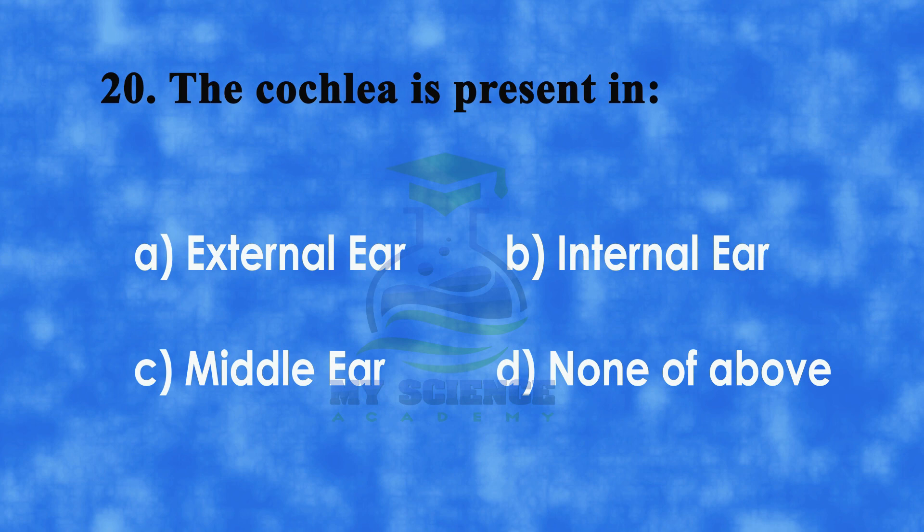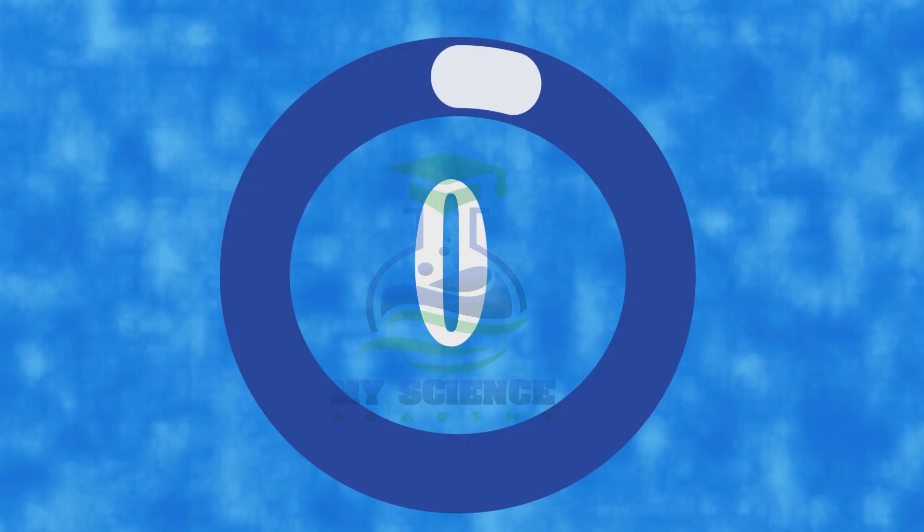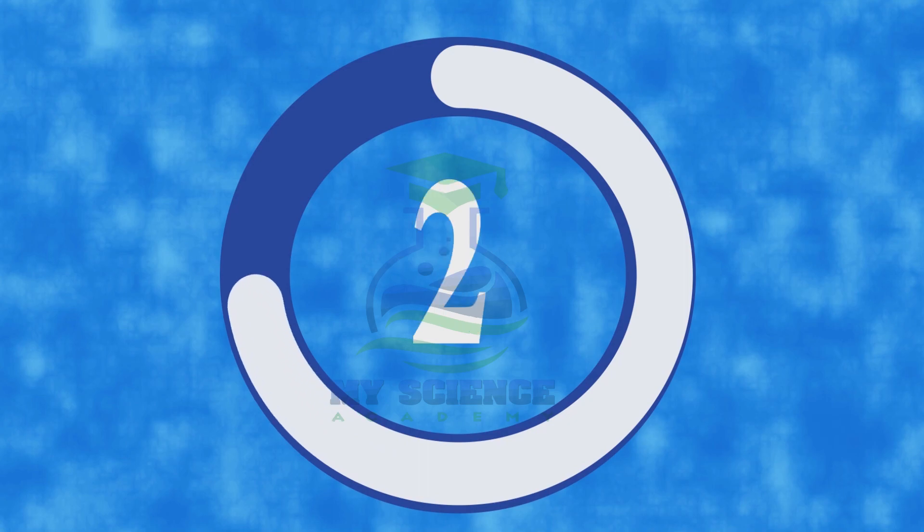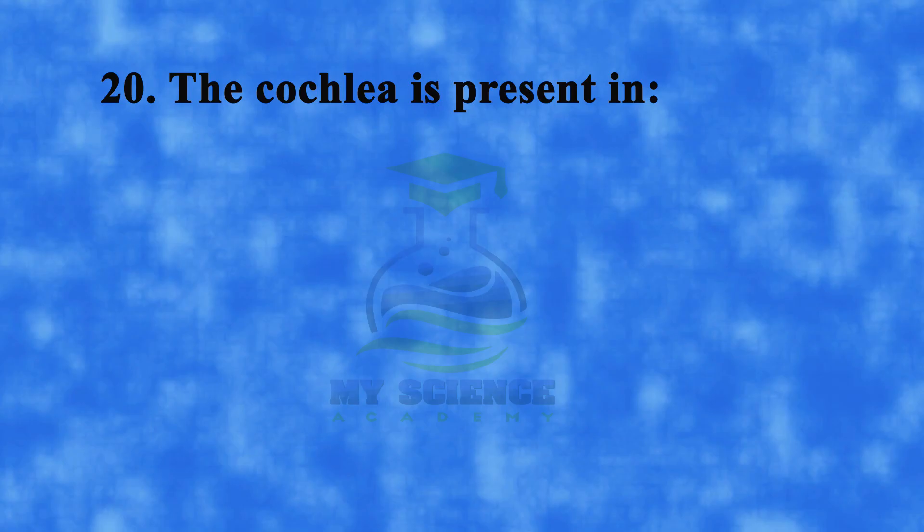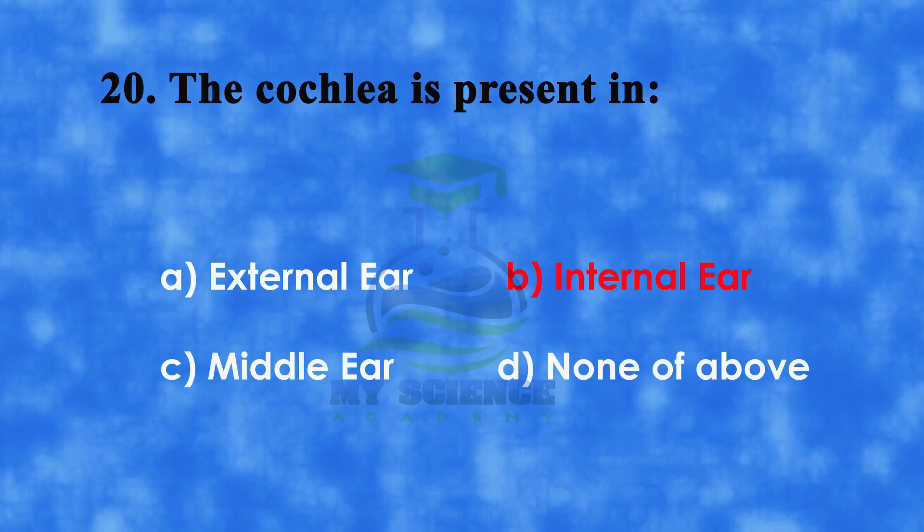Number 20: The cochlea is present in. A: external ear, B: internal ear, C: middle ear, or D: none of above. And correct answer is B: internal ear.